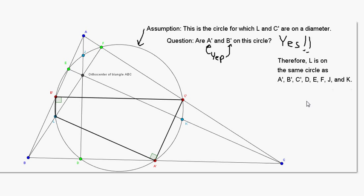Now if you count very closely, that's 1, 2, 3, 4, 5, 6, 7, 8, 9 points that we've proved are all on this same circle.